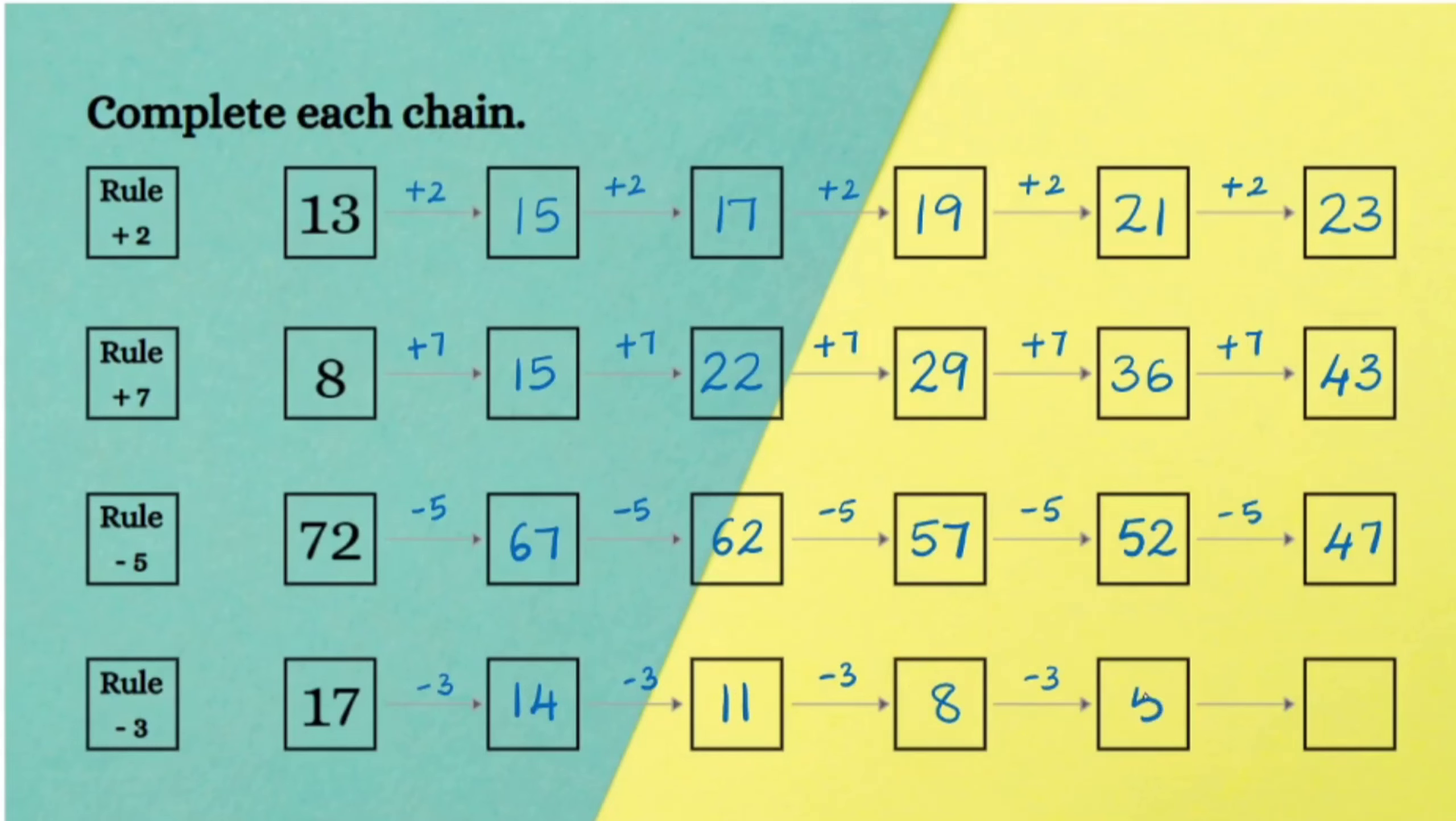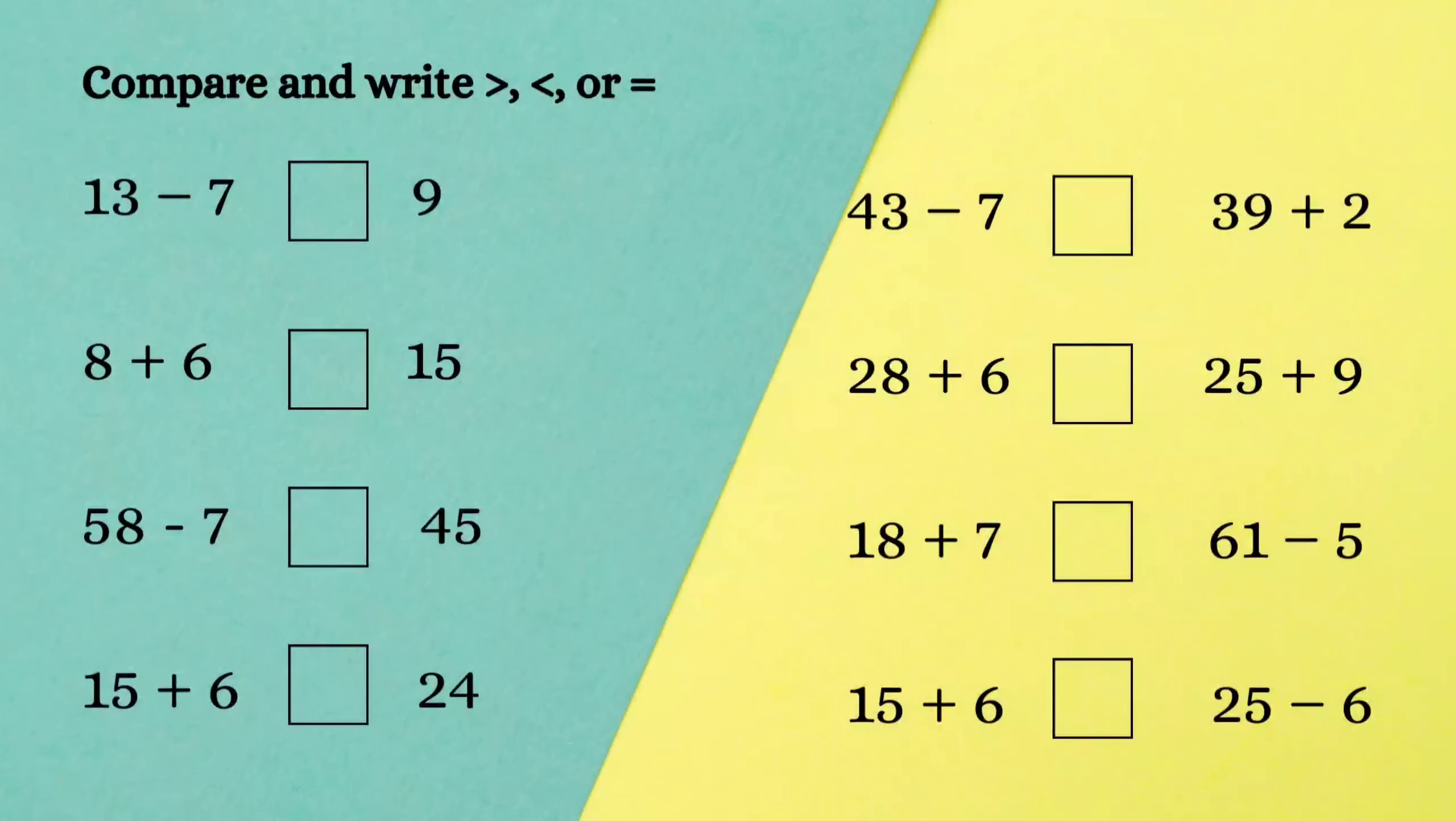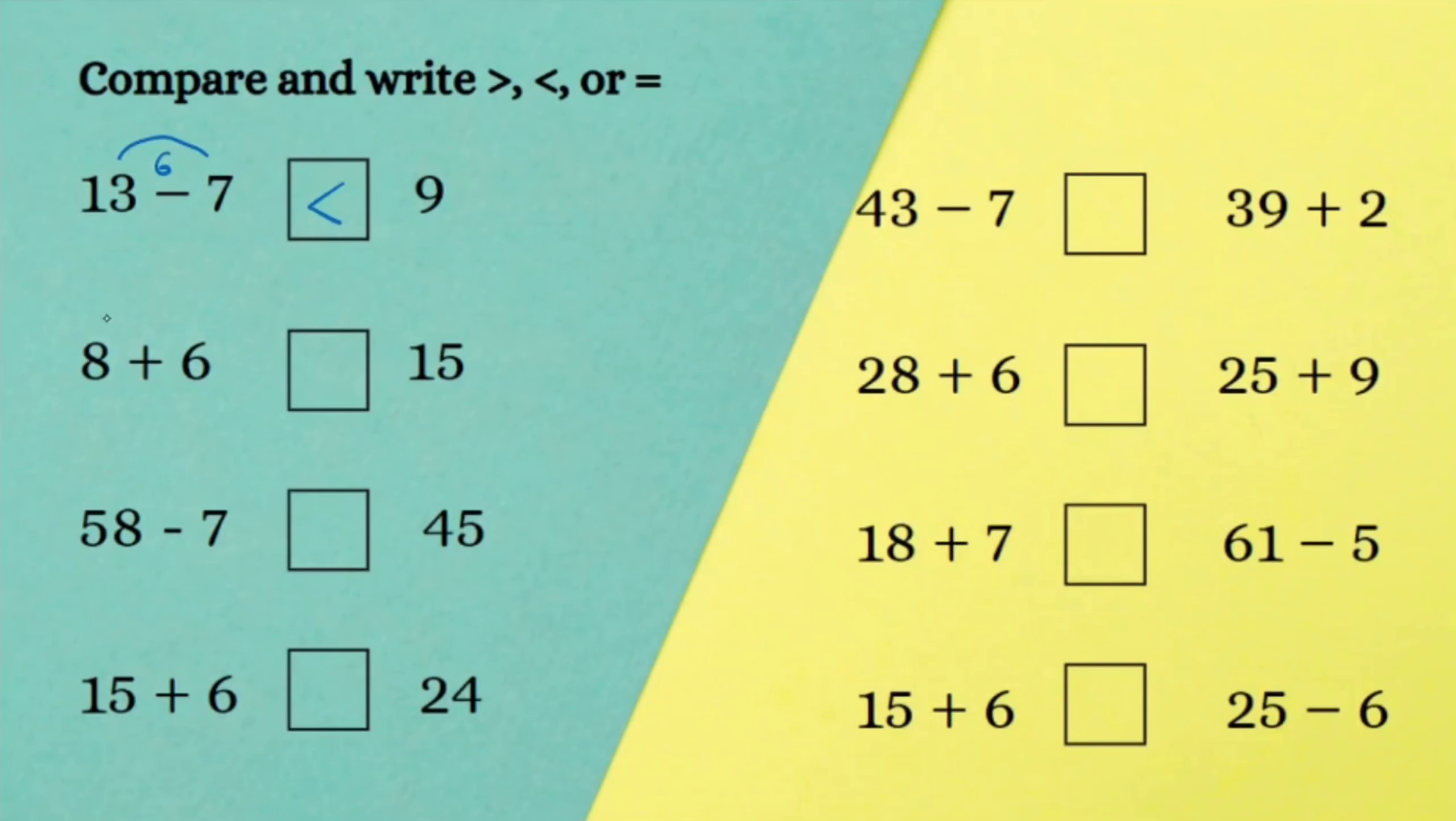The next worksheet is compare and write the symbols. In the given set of numbers we observe there are operations included. So in this case we have to first find the sum or the difference according to the given sign, and then compare the given numbers.